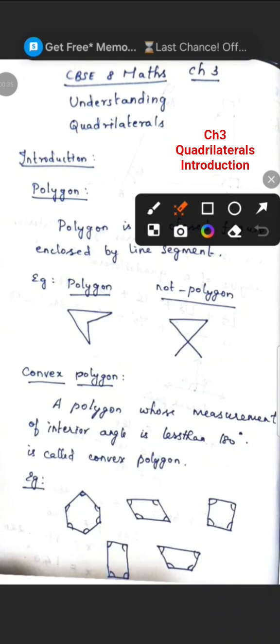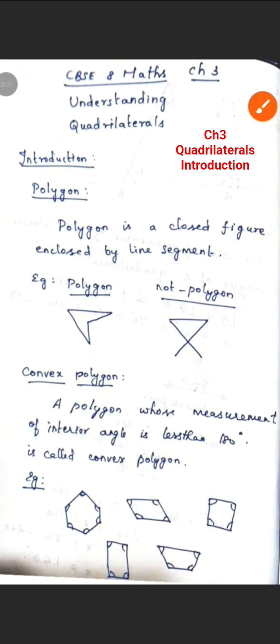Next, what is a quadrilateral? Consider a polygon. A polygon is a closed figure, closed by line segments — but the line segments should be four. That means a quadrilateral is a polygon enclosed by four line segments. I hope you all understand the definition of quadrilateral.